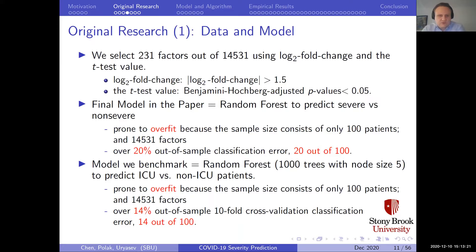We also used this data and ran a random forest for ICU versus non-ICU classification, achieving a slightly smaller classification error of 14%, but it is still relatively high out-of-sample error.